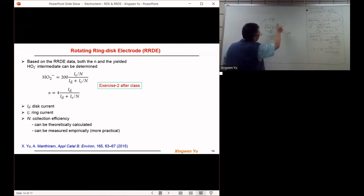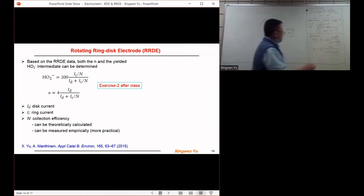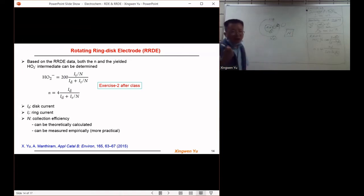So only a small amount of intermediate species can be available to the ring. So we need to use a collection efficiency for these calculations. The collection efficiency depends on the configuration of the RRDE.